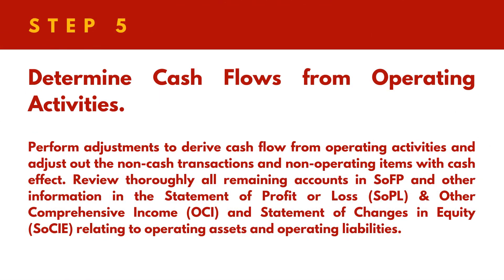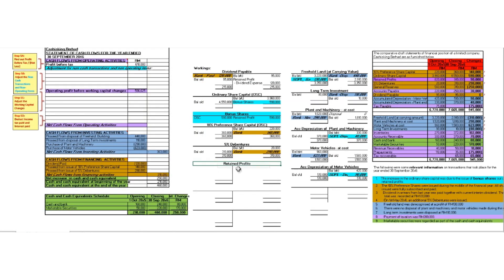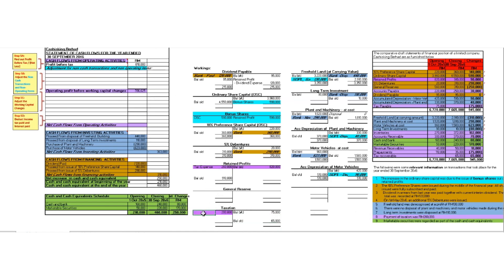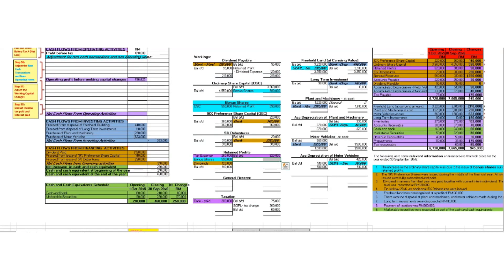Step 5 is to determine cash flows from operating activities. Operating activities use purple as the colour code. Step 6: We need to perform adjustments to derive cash flows from operating activities, and to adjust out those non-cash transactions and non-operating items with cash effects.